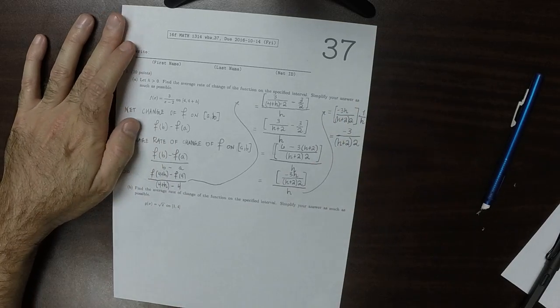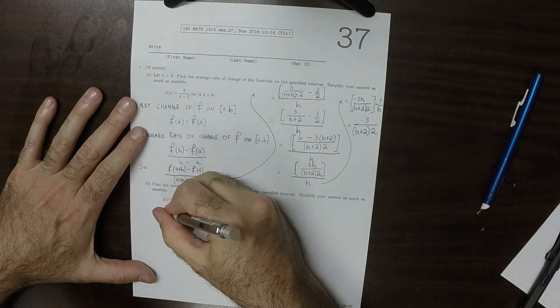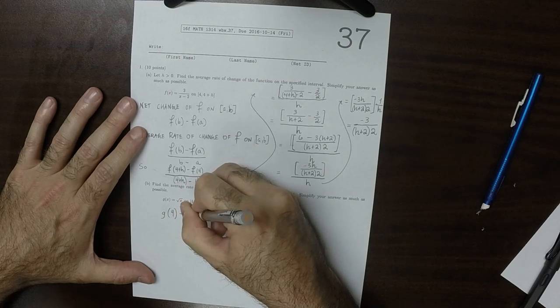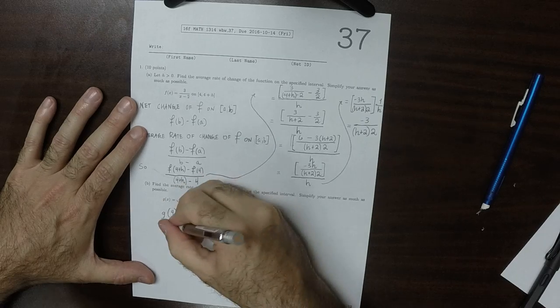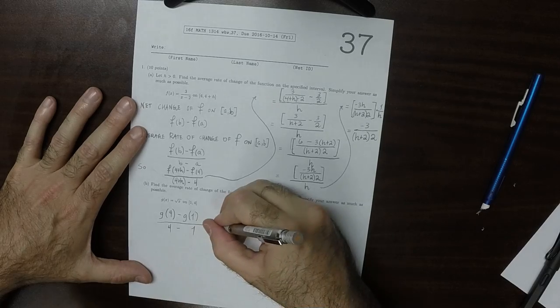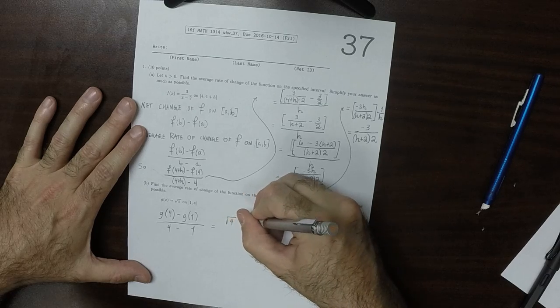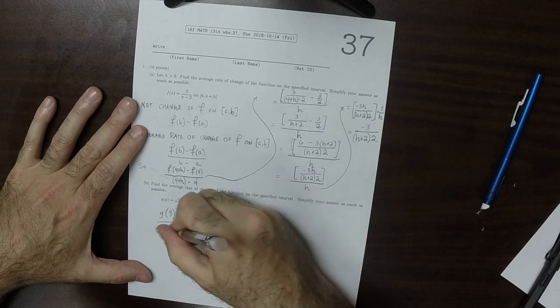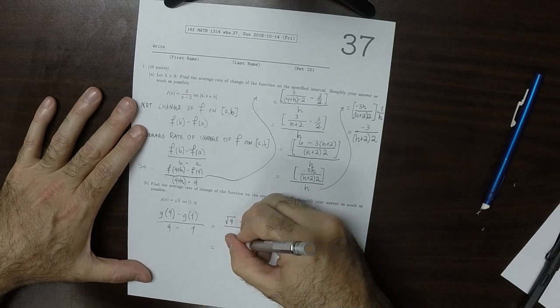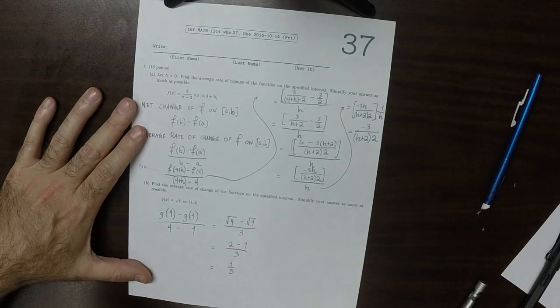So find the average rate of change of this one. Well again, part B is easy in comparison to part 1. This would be G(4) minus G(1) over 4 minus 1. Pretty straightforward now. That would be square root 4 minus square root 1 over, well, 4 minus 1, that's 3. Square root of 4 is 2, square root of 1 is 1 over 3. So, 1 third.